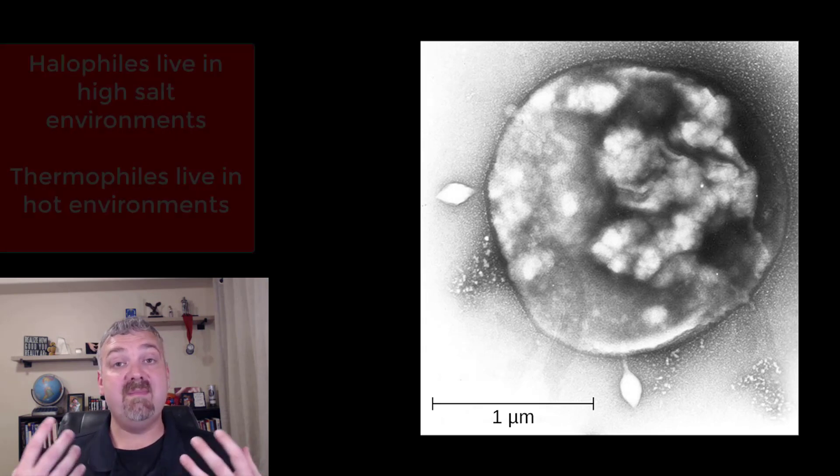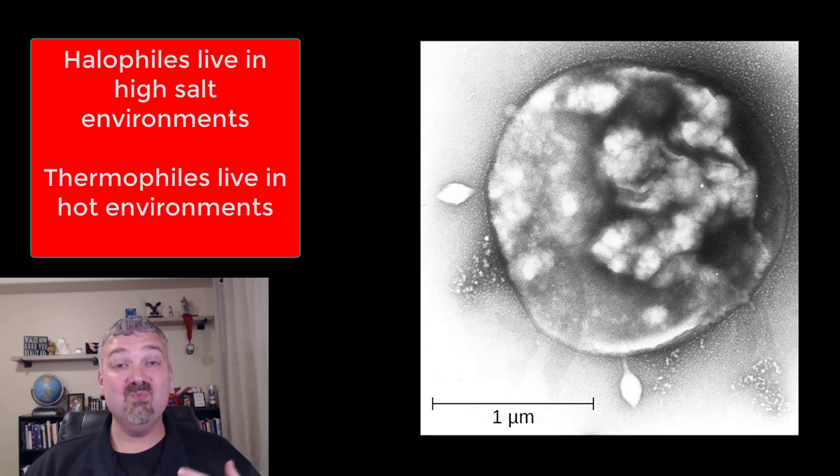Examples would be your extreme halophiles. They'll live in places with really high salt concentrations where other organisms wouldn't live. Also extreme thermophiles. They can live in volcanoes and stuff, live at extreme temperatures where other organisms wouldn't live.